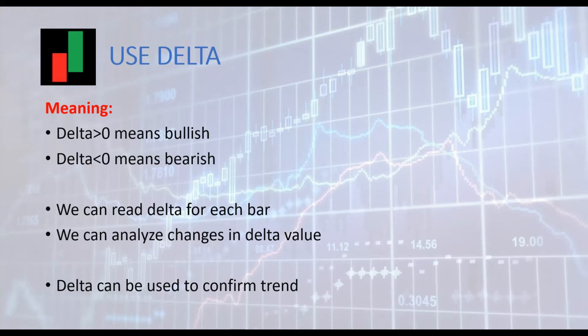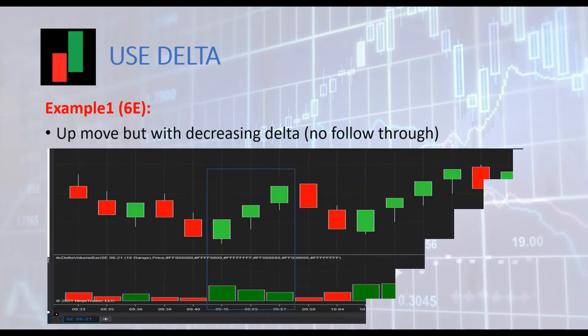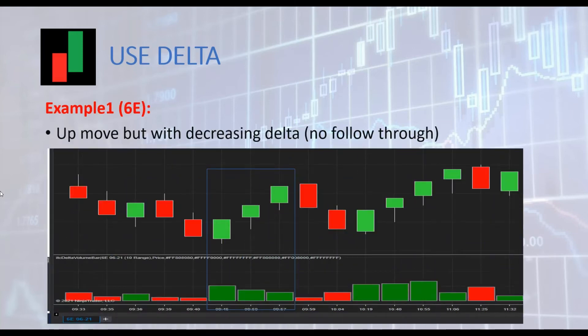We can read delta for each bar, but it is more important to analyze changes of delta in the sequence of bars. We will see some examples of use of delta to confirm trend. Here we can see a first example with the euro futures, 6E.